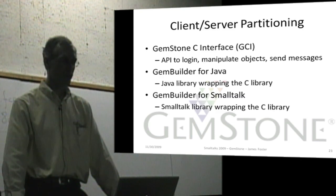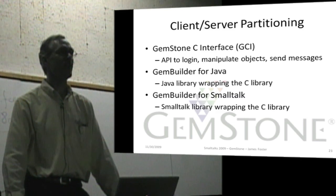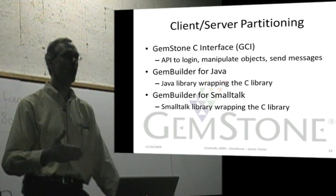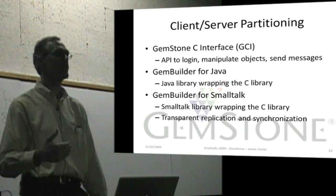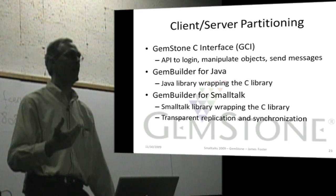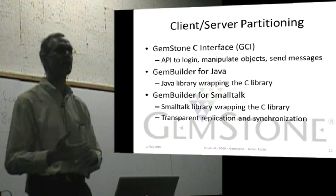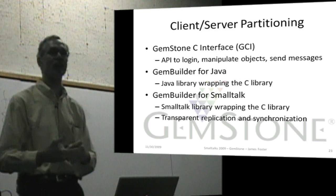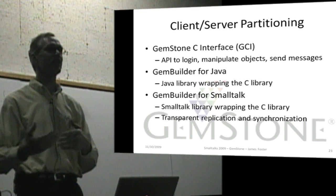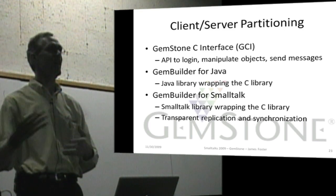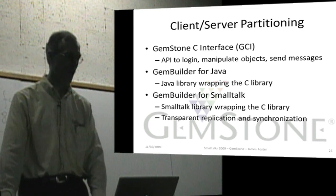In VisualWorks and VA Smalltalk from Instantiations, you have the capability of loading a Smalltalk library that provides transparent replication and synchronization. As you make modifications to objects in your Smalltalk image in VisualWorks or VA Smalltalk, those changes are replicated to the database. And when changes are made in the database, those changes will be reflected in your local client library.